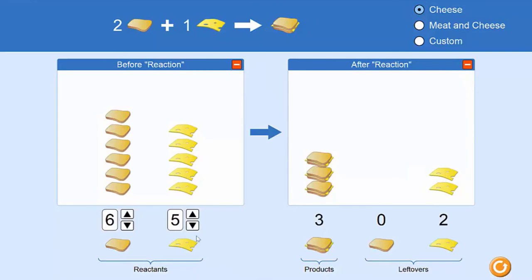All right, let's try it the other way around. The expected ratio is two to one. But if I have more than twice as much bread, let's bump it up to seven slices, then the cheese runs out first and we have excess bread.